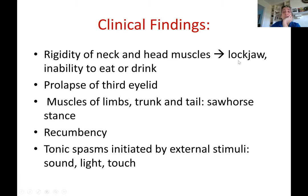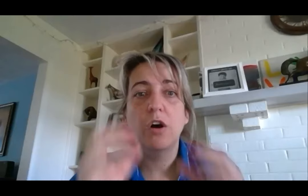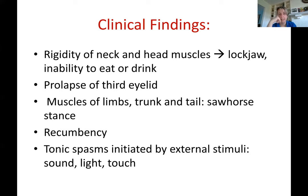The muscles are so tight that the horse cannot move its jaw. A classic mnemonic sign of the disease is risus sardonicus — a sarcastic smile — because the horse's facial muscles are fixed in a grin. The horse is unable to open its mouth, which prevents it from drinking or eating. Another sign is prolapse of the third eyelid.